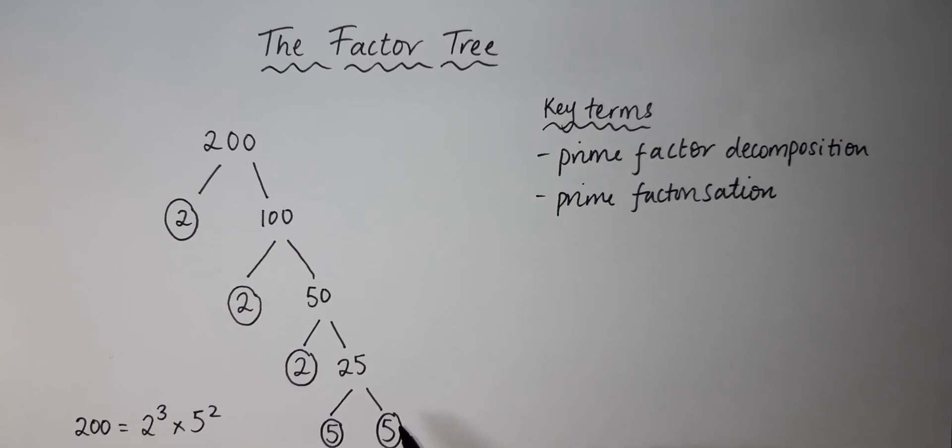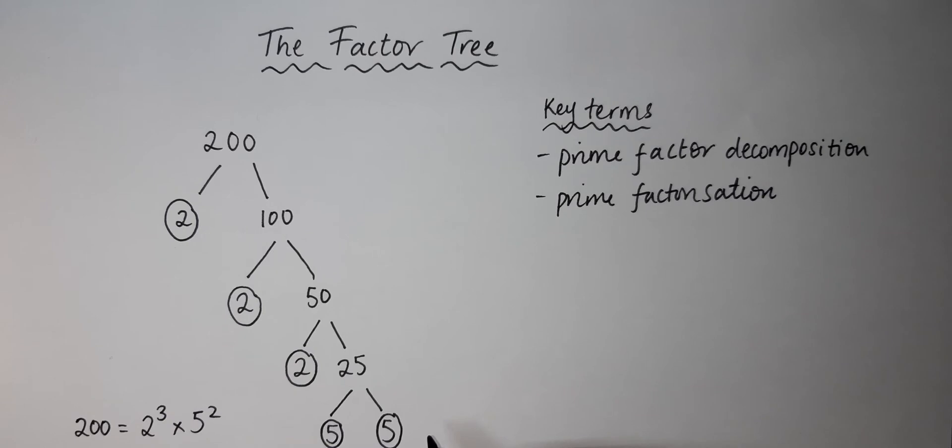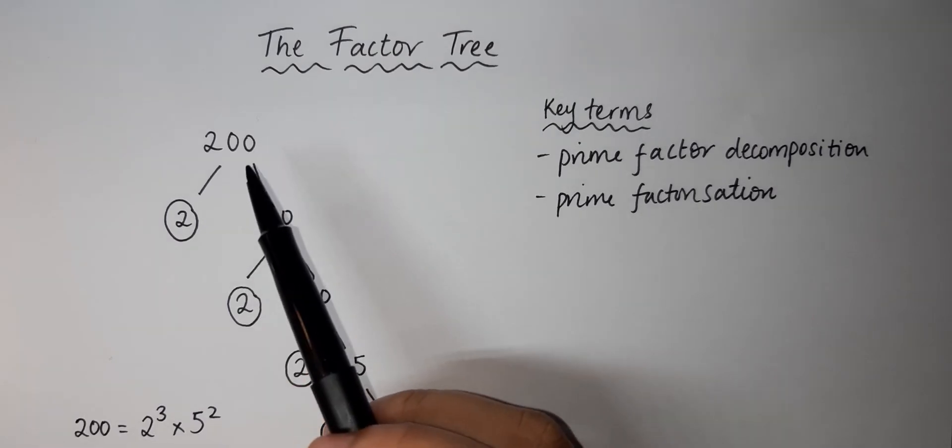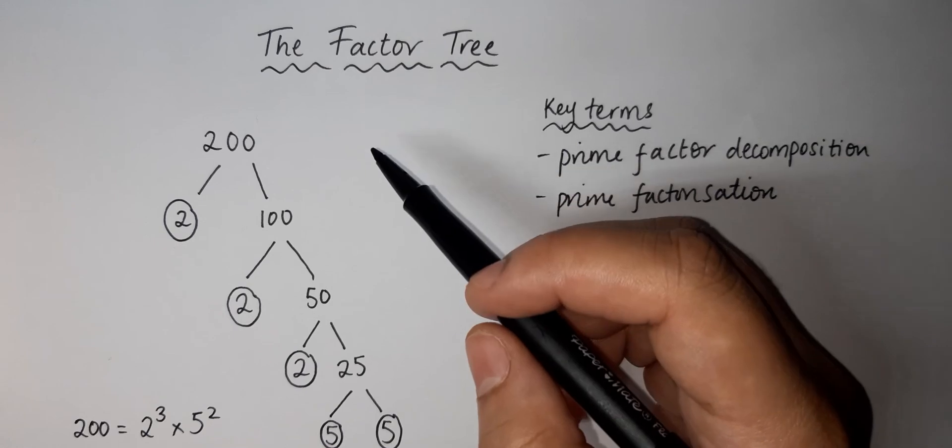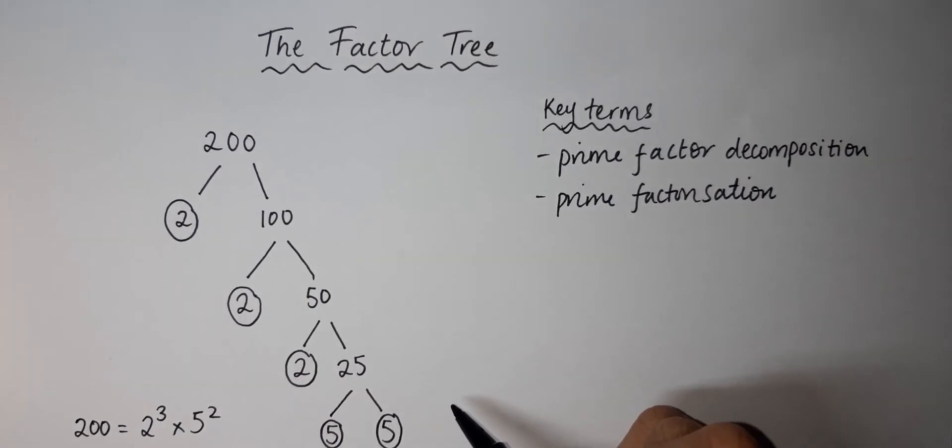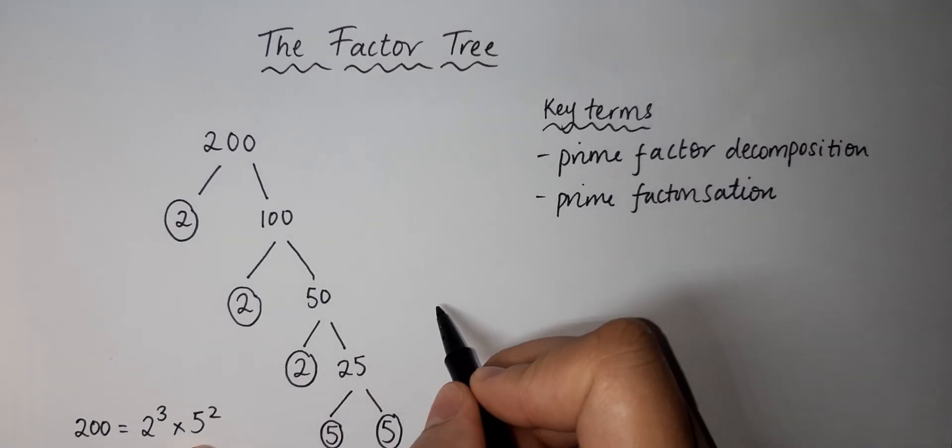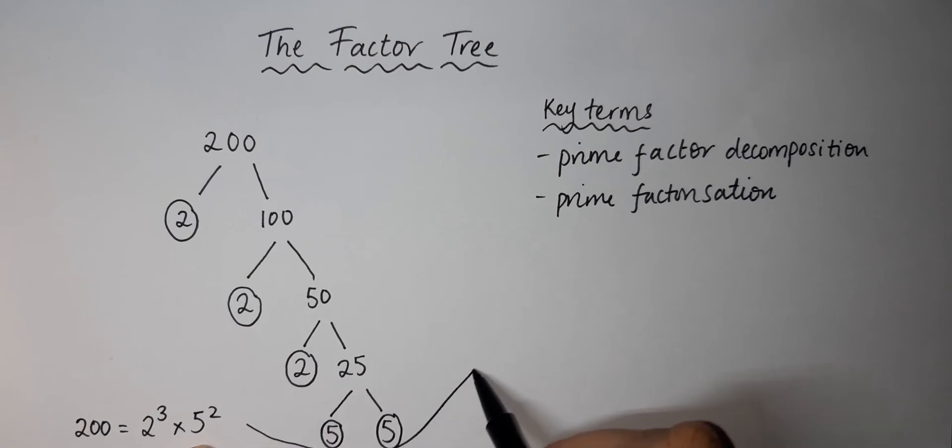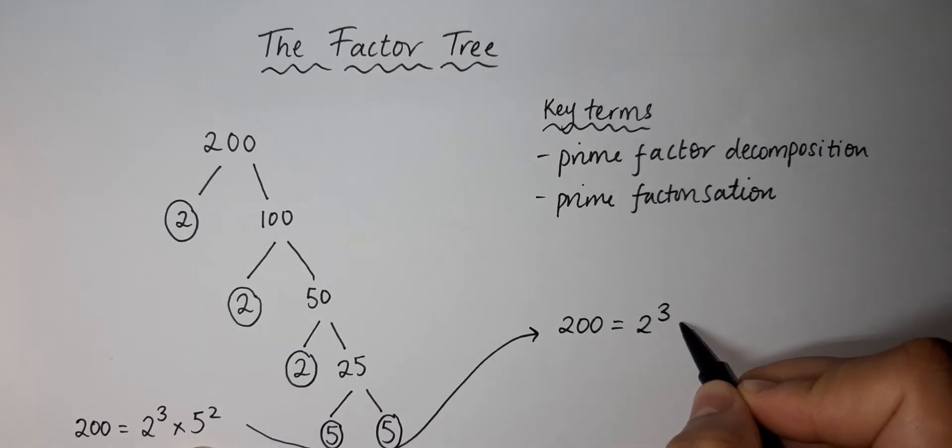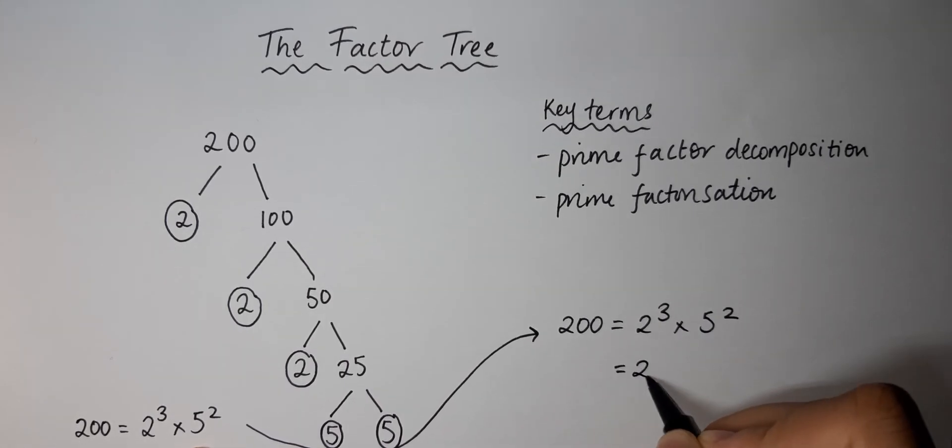This is an example of how we use prime numbers in a question. A typical question will ask what are the prime factors of 200, or what can 200 be broken down into. We can use a factor tree. This can also be written as, if we come over here, we can also write if we do an arrow right here...